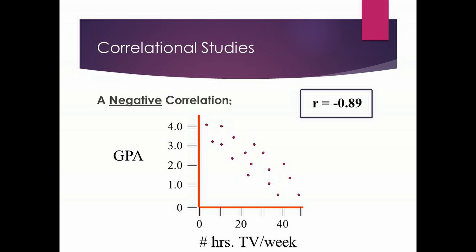Looking at the correlation coefficient for this situation: lowercase r equals minus 0.89. The minus sign tells you only that this is a negative correlation — one goes up, the other goes down. Looking at the value, 0.89 is pretty close to 1, so this is a strong correlation.